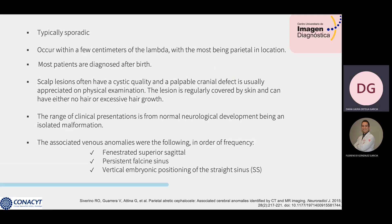They are typically sporadic and have a more favorable prognosis than true or non-involuted cephaloceles. Atretic cephalocele usually occurs within a few centimeters of the lambda, with most being parietal in location, but sometimes it can be occipital. Most patients are diagnosed after birth.